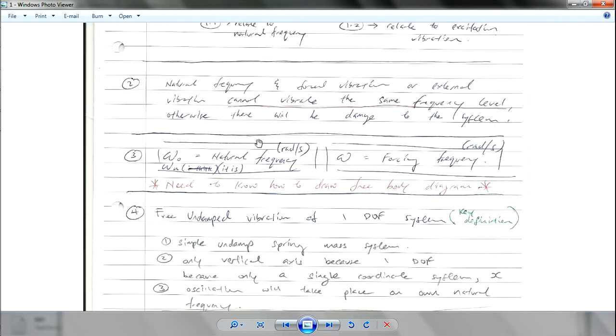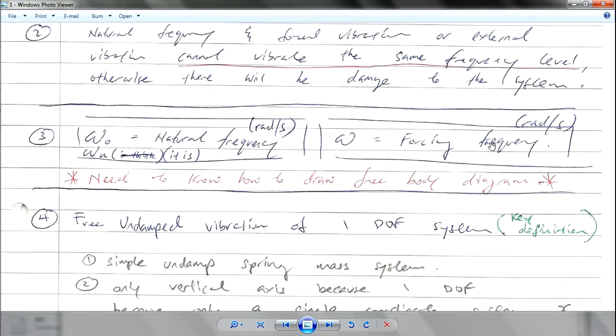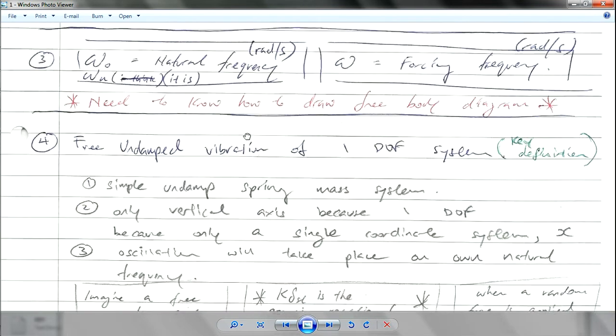These are the terms. Just take note that W0 or Wn is natural frequency in radians per second. And for forcing frequency, you have to take note that they are different, though the units are the same.